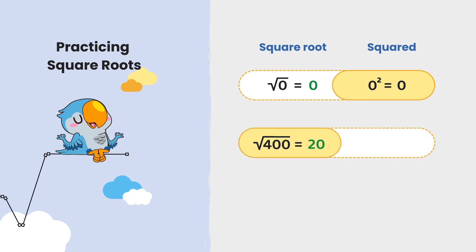Next, the square root of 400 is 20 because 20 squared gives 400.